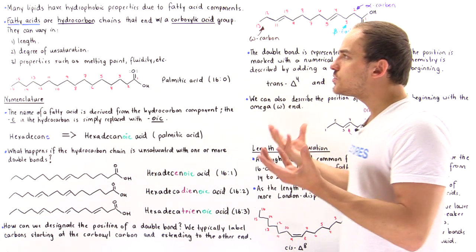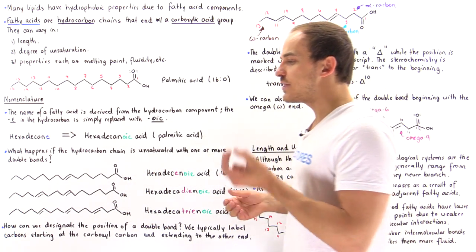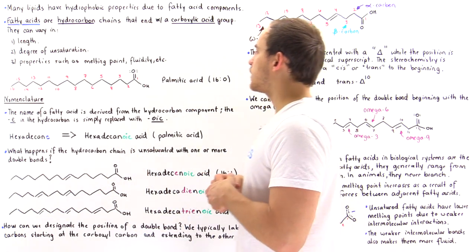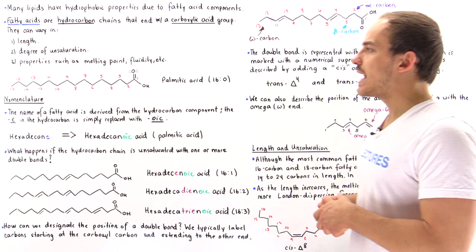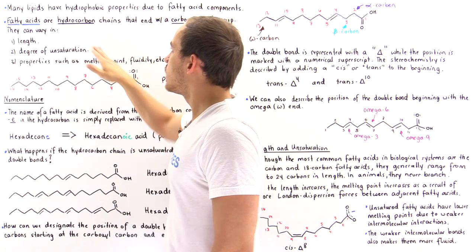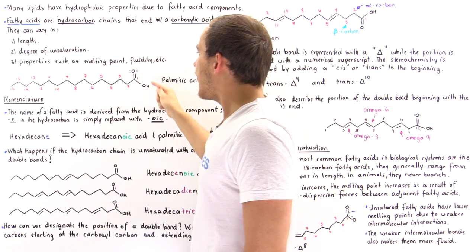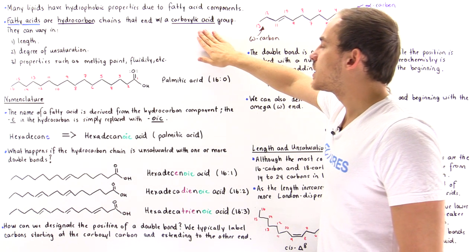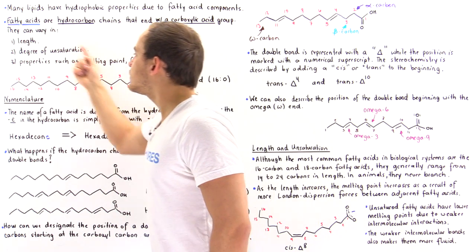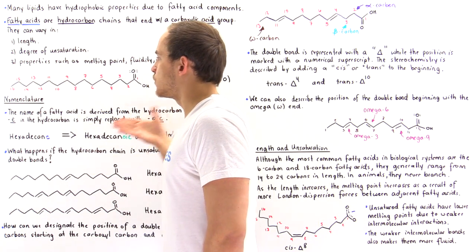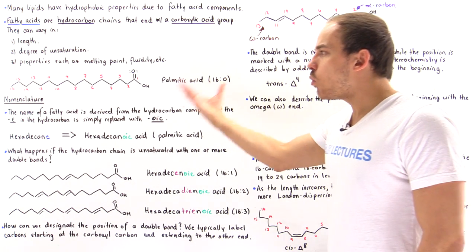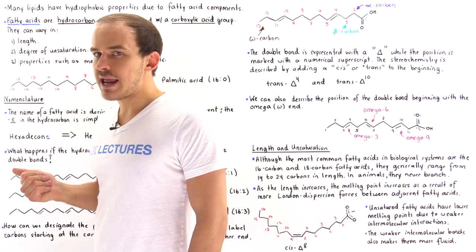To demonstrate what we mean by fatty acid, let's look at the most common type of fatty acid in humans and other animals: palmitic acid. This entire section is the hydrocarbon chain, and this functional group is the carboxylic acid. So we have a tiny polar section and a dominant nonpolar section — that's why fatty acids are predominantly nonpolar.